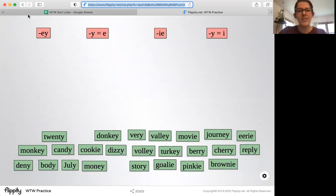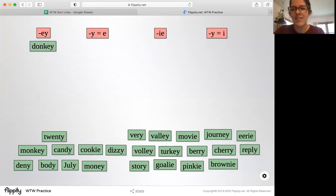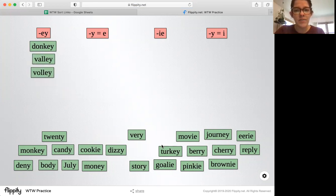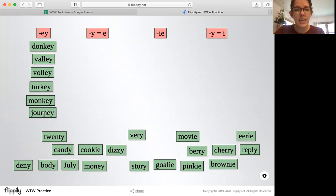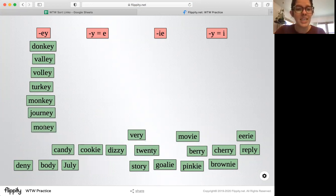Let's start with words that end in ey. Those are pretty easy to pick out. We just look through our words and put any words that end in ey. When words end in ey it makes the e sound like donkey, valley, volley, turkey, monkey, journey. I don't see any more ey's but there might be some. Oh, money. We'll come back to that if there's more.